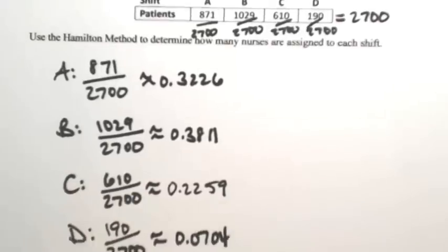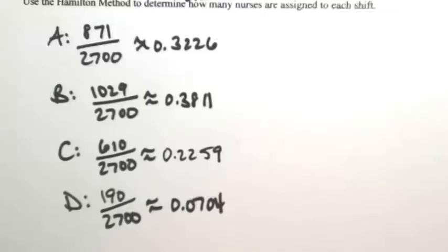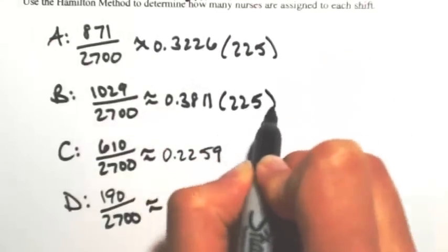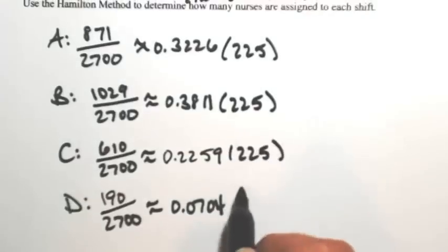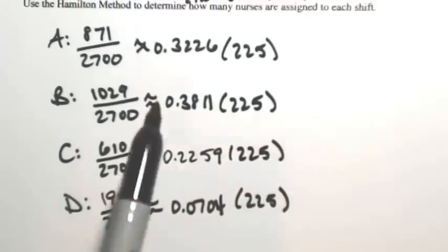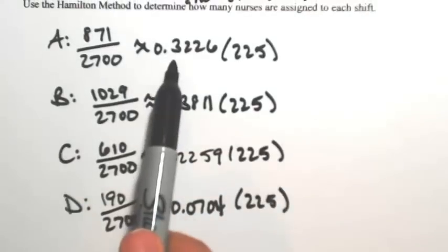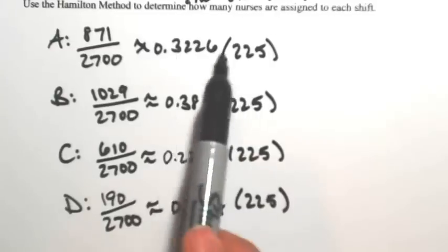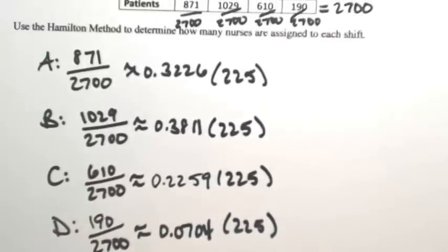So by dividing all of this out, what we've done is figured out what is the percent of patients that are seen in each shift. So to figure out the number of nurses that are needed, we're going to take each of these and multiply it by the total number of nurses we have, which is 225. So shift A has about 32 percent of the patients, then we need 32 percent of the nurses.